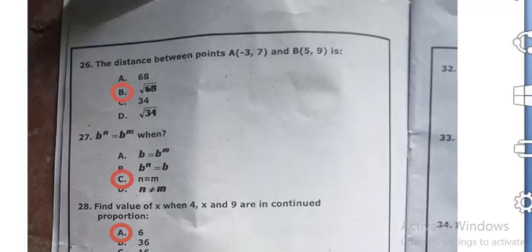The distance between point A minus 3, 7 and B 5, 9 is square root 68, option B.